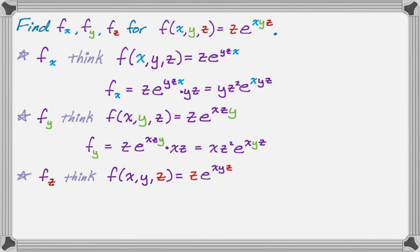That's important because we have z times e^(xyz). And z times e^(xyz) right there is actually a product, so we need to use a product rule. So a little bit of extra work here, but not really bad.